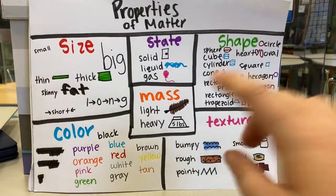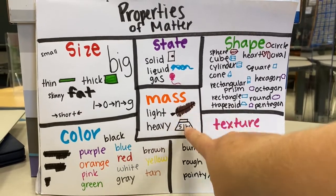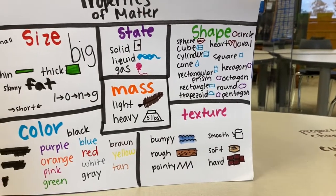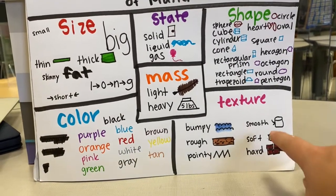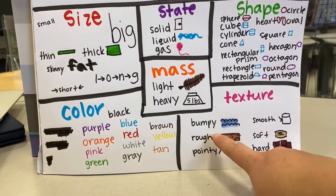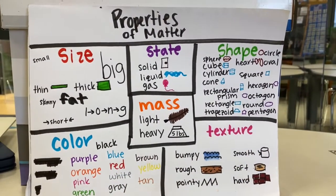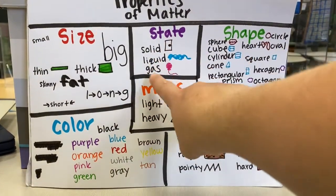One property of matter is its mass, so how light or heavy it is. It is its shape, so all of our different 3D and 2D shapes, and its texture, bumpy, rough, pointy, smooth, soft, hard, and it's its state, solid, liquid, or gas.